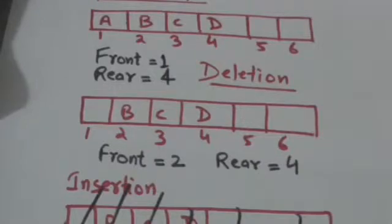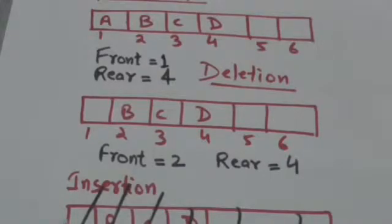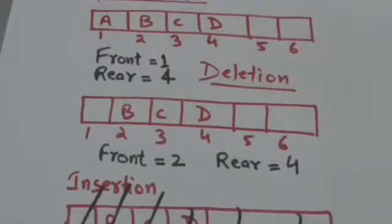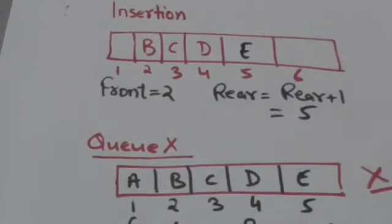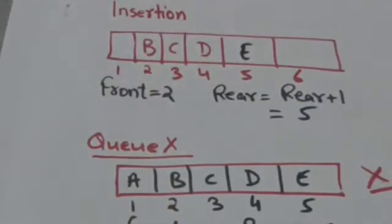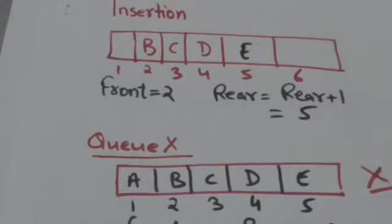Now suppose we have to insert an element E in queue M. For this, first we will increase the value of variable rear by 1, so rear will become equal to 5. After this, we will store element E in array M at index rear. So element E will be inserted in array M at index 5, and now E is the rear element of queue M.